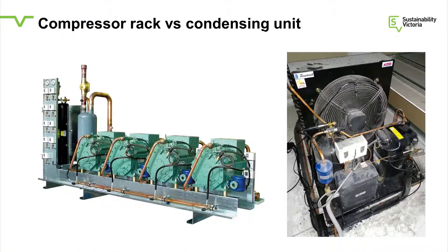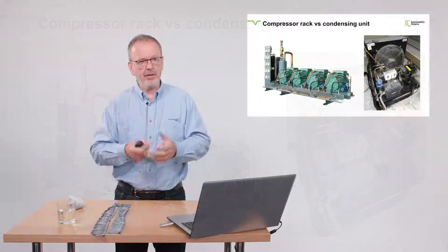We have a compressor rack versus a condensing unit. On the left-hand side, four compressors are mounted on a rack — this is your classic supermarket or larger commercial refrigeration solution. These compressors work together and push the gas into a remote condenser. The unit on the right is a complete self-contained system: it has a compressor, a condenser with a fan mounted to it, and a few other bits and pieces needed to make the system run.